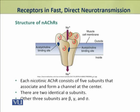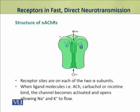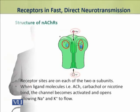The receptor sites are on each of the two alpha subunits. When ligand molecules, that is acetylcholine, bind to these receptor sites, the channels become activated and they open. As a result, they allow the sodium and potassium ions to flow.